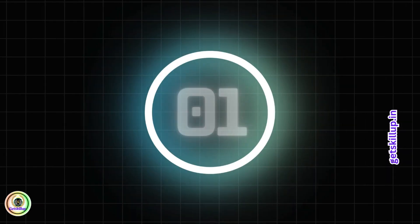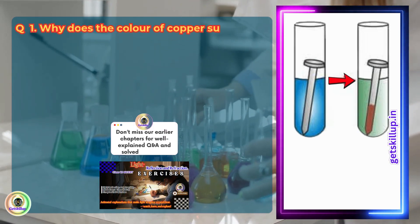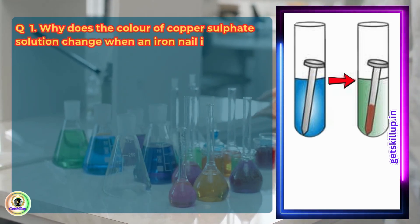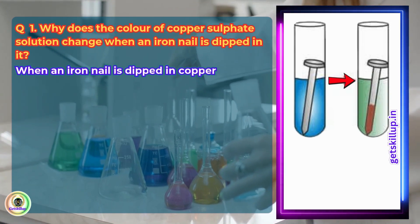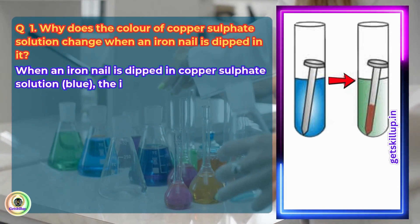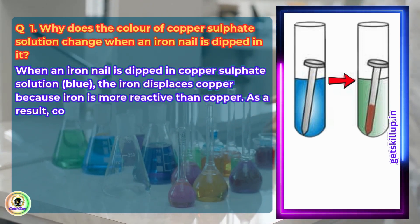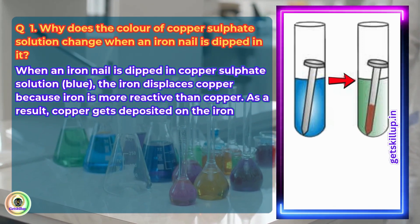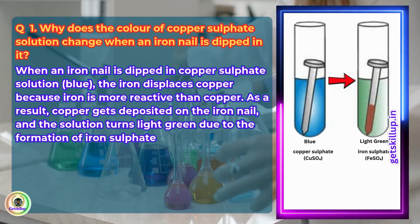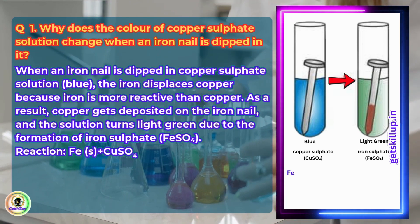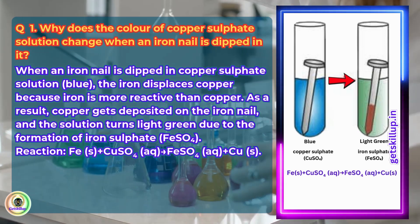Section 1.3, Question 1. Why does the color of copper sulfate solution change when an iron nail is dipped in it? When an iron nail is dipped in copper sulfate solution (blue), the iron displaces copper because iron is more reactive than copper. As a result, copper gets deposited on the iron nail and the solution turns light green due to the formation of iron sulfate (FeSO4). Reaction: Fe (solid) + CuSO4 (aqueous) → FeSO4 (aqueous) + Cu (solid).